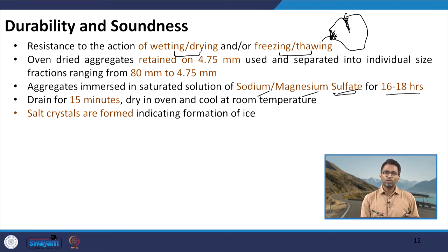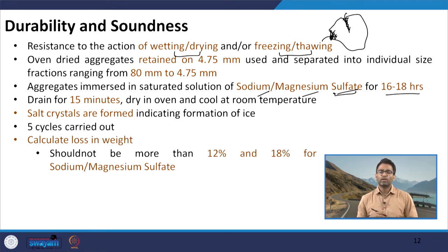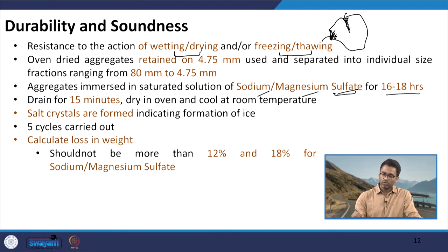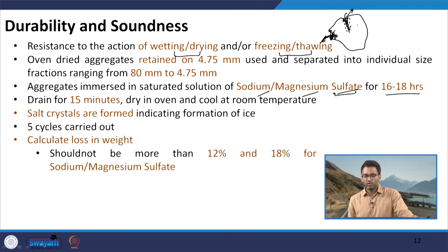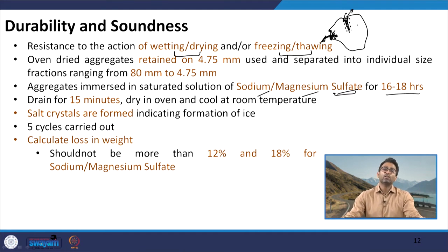We then take the aggregate, dry it in the oven until constant weight is reached, cool it at room temperature, and put it again in the sodium or magnesium sulphate solution to repeat the entire process. We do this for typically 5 cycles. After 5 cycles, we calculate how much weight is lost. During draining, the crystals which are formed get washed away, and if aggregate particles have a tendency to break down under this action, some aggregate particles also get eroded along with the solution. The specification says that the loss in weight should not be more than 12 percent for sodium sulphate and 18 percent for magnesium sulphate.